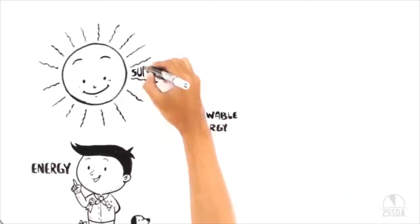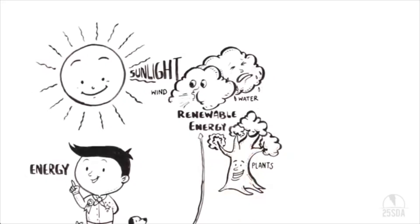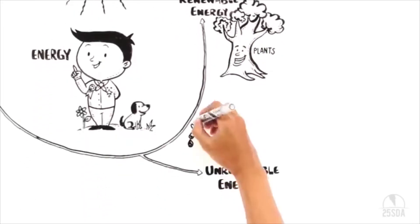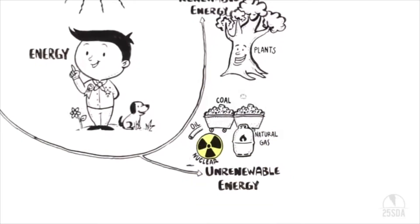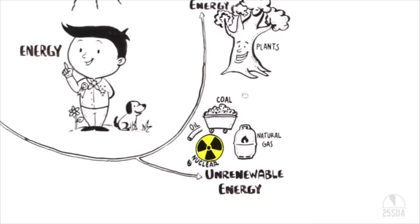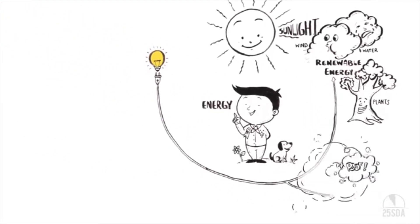Renewable energy: sunshine, wind, water, plants - the flow of energy from these never stops. Oil, coal, natural gas, atomic energy - there's a limit to these energies. These energies can all be used up if we use too much.